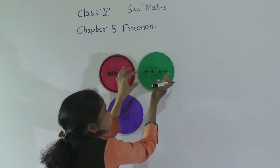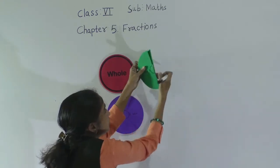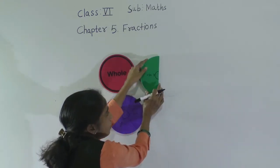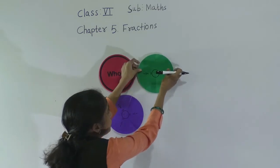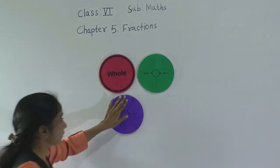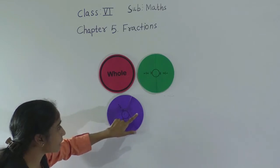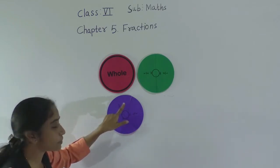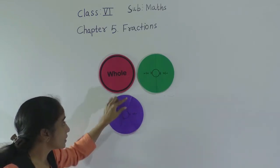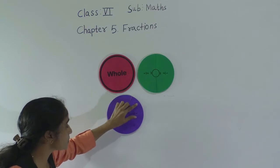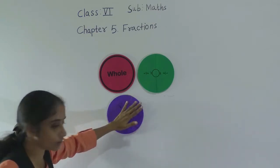Are you able to see? Half part. Now, the same whole is divided into three equal parts, so each part is one third part. This part, this part, this part — it is divided into three equal parts.